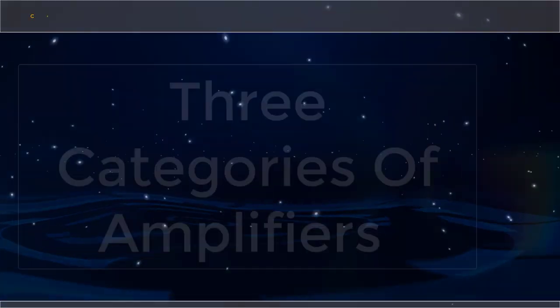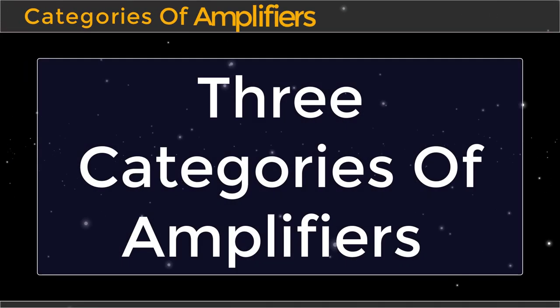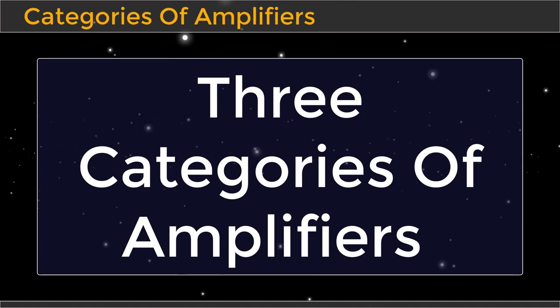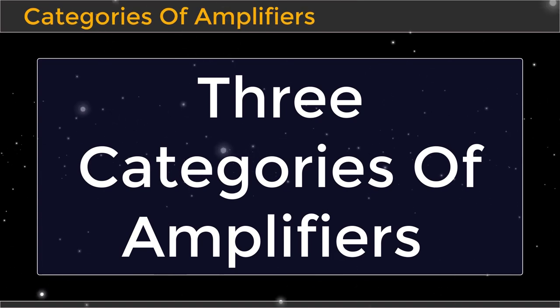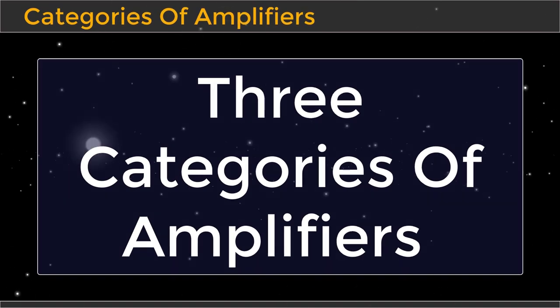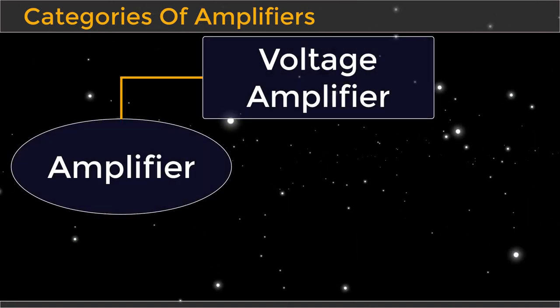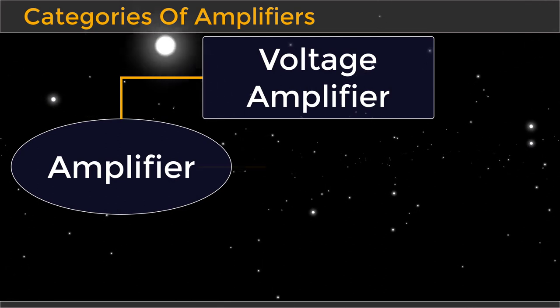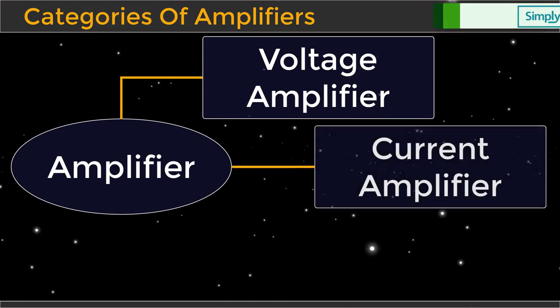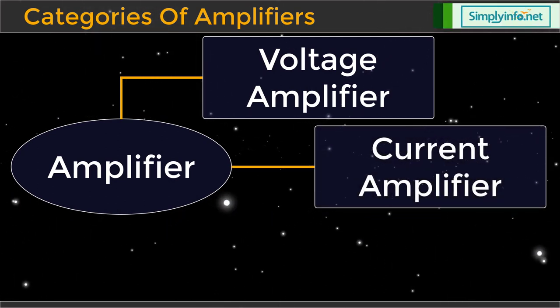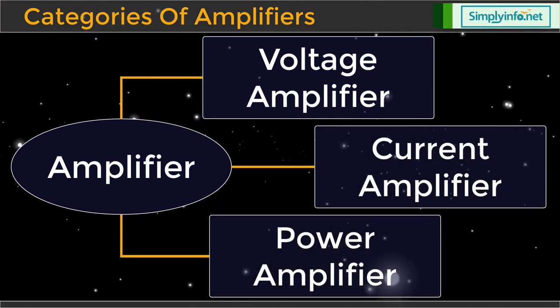There are three categories of amplifiers depending on the property of their output: Voltage amplifier, Current amplifier, and Power amplifier.